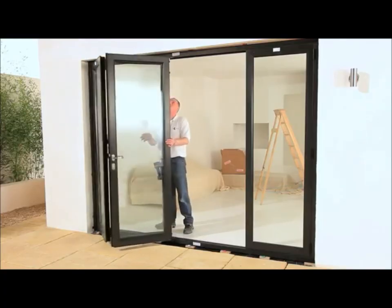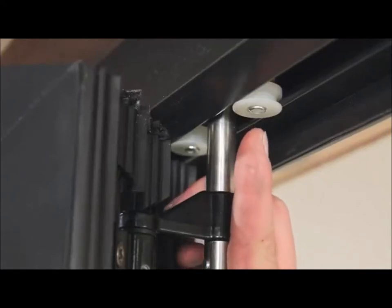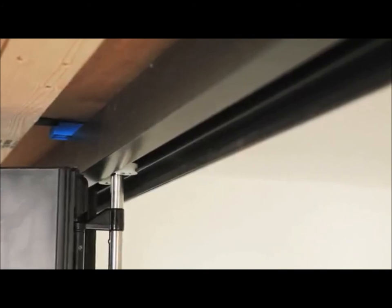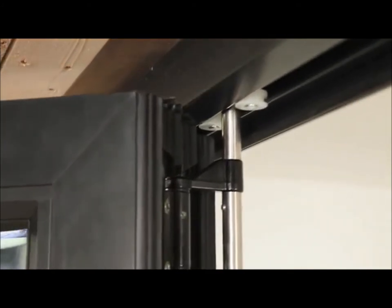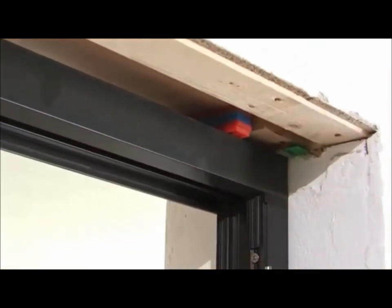Starting with the doors completely open, check the level of the top track, observing the centre pin in the top carriage guide wheel. This should protrude approximately 1mm through the centre of the wheel and stay consistent as the doors are closed along the length of the track. If this is not the case, repack the top track to suit.